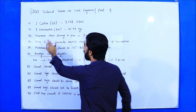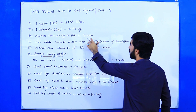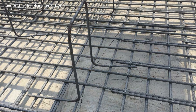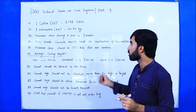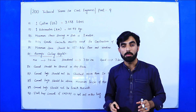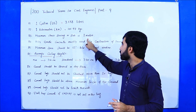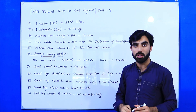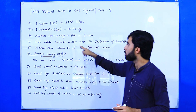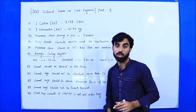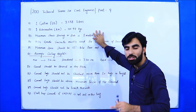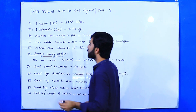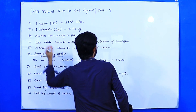Term number 83: Maximum chair spacing in slab is one meter. Chairs are provided in an RCC slab to maintain the distance between main bars and distribution bars. The maximum space between two chairs should not be more than one meter. If you place chairs more than one meter apart, it cannot work properly in an RCC slab.